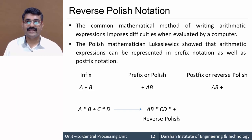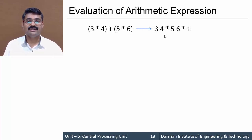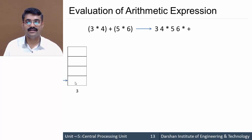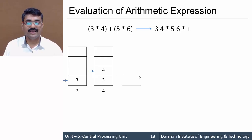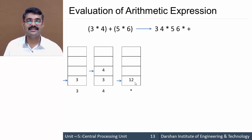Let's evaluate the arithmetic expression (3 × 4) + (5 × 6) using a stack. The reverse Polish notation is: 3 4 * 5 6 * +. First, 3 is pushed onto the stack. Then 4 is pushed — the stack pointer is incremented and 4 is stored. When the operator * arrives, 4 and 3 are popped, multiplied to give 12, and the result 12 is pushed back onto the stack.